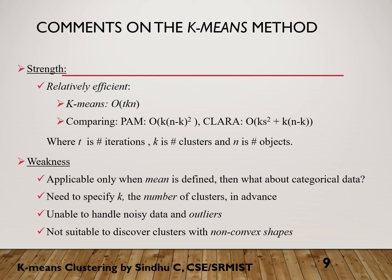There are some drawbacks. K-means is applicable only where data objects can be computed with mean points, so it is not applicable for categorical data — for categorical data, you must convert it before calculating the mean. You also need to specify K at the start of the process. Additionally, it is difficult to handle noisy data and outliers, and it is not suitable for discovering clusters with non-convex shapes.